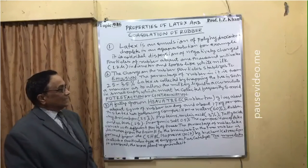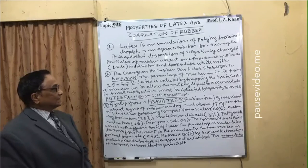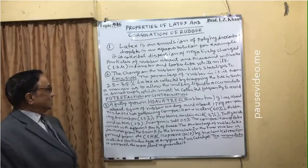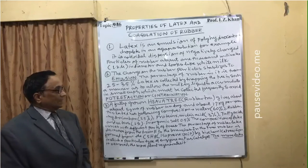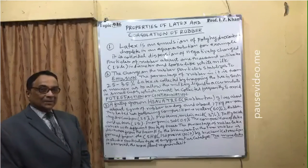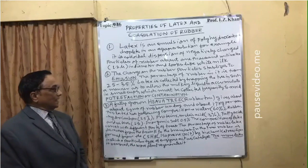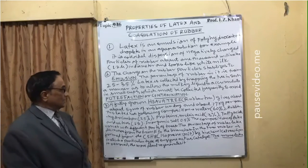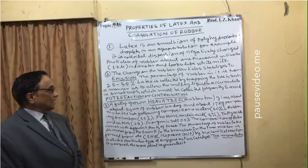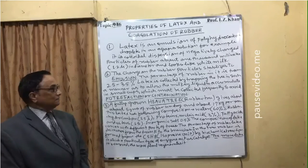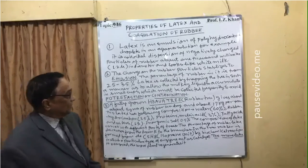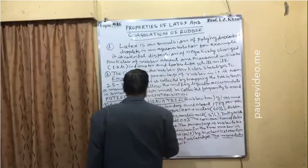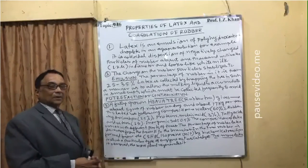The percentage of rubber in latex is from 25 to 35 percent. Latex is collected by tapping the tree in such a manner as to allow the milky liquid to accumulate in small cups, which must be collected frequently to avoid putrefaction or contamination. Point 3: a fully grown Hevea tree — commonly known as the rubber tree — gives about 5 grams of rubber per day and about 1.7 kilograms of rubber per year.